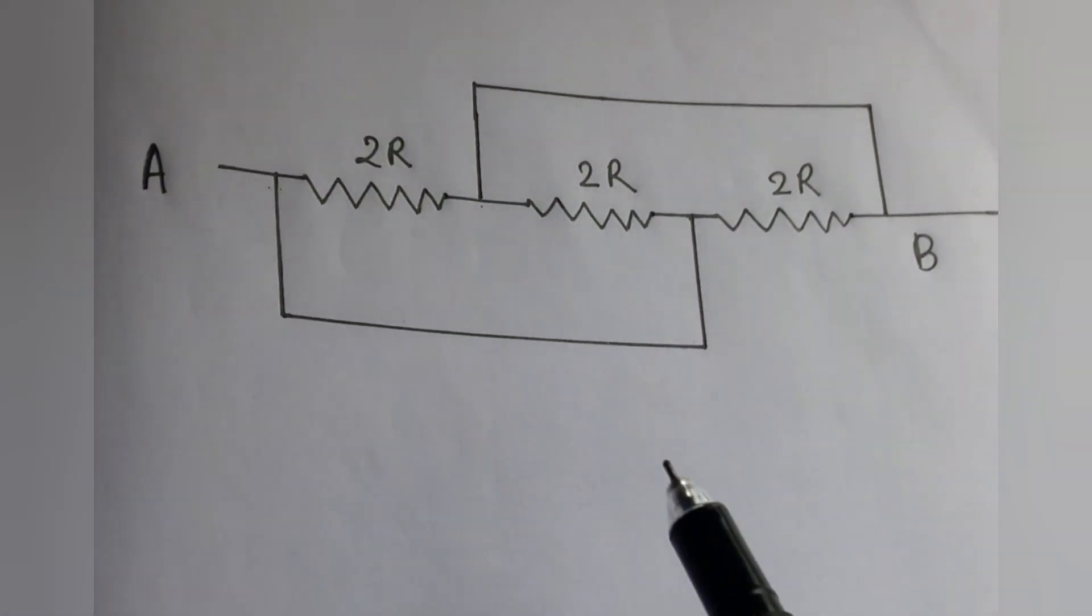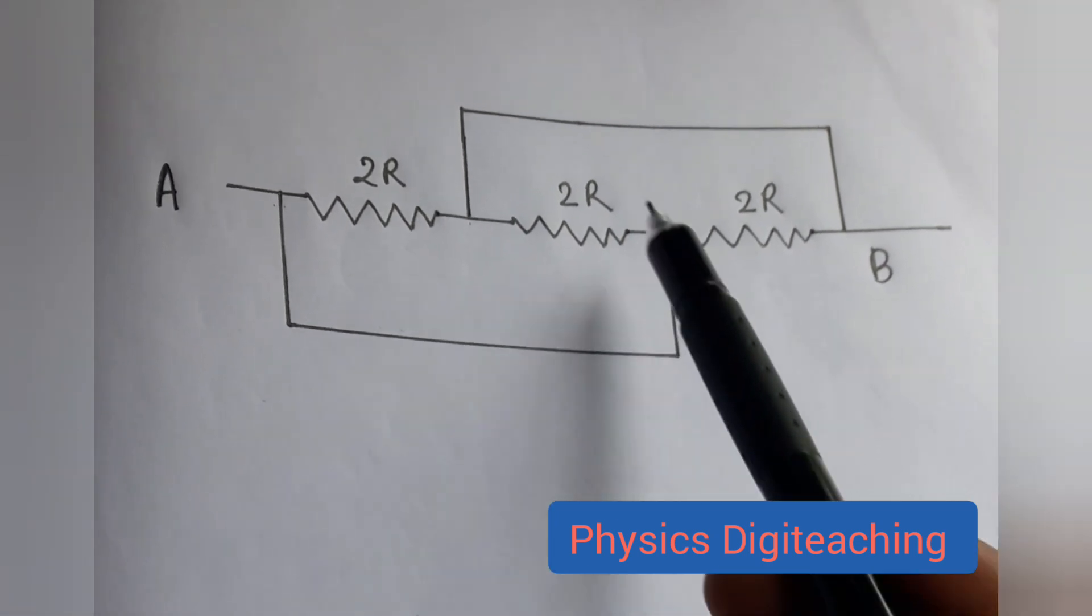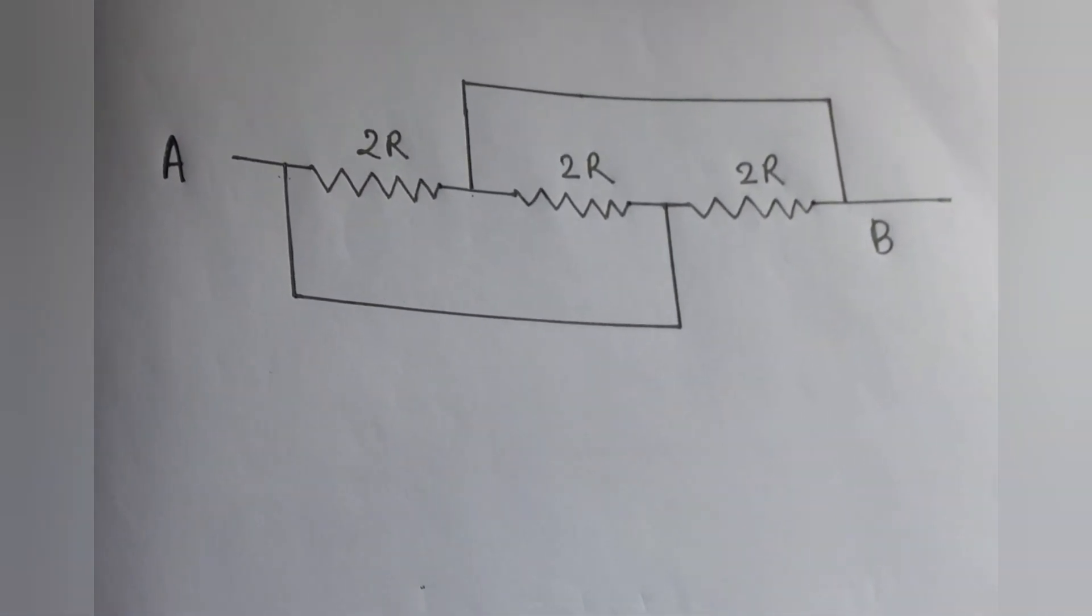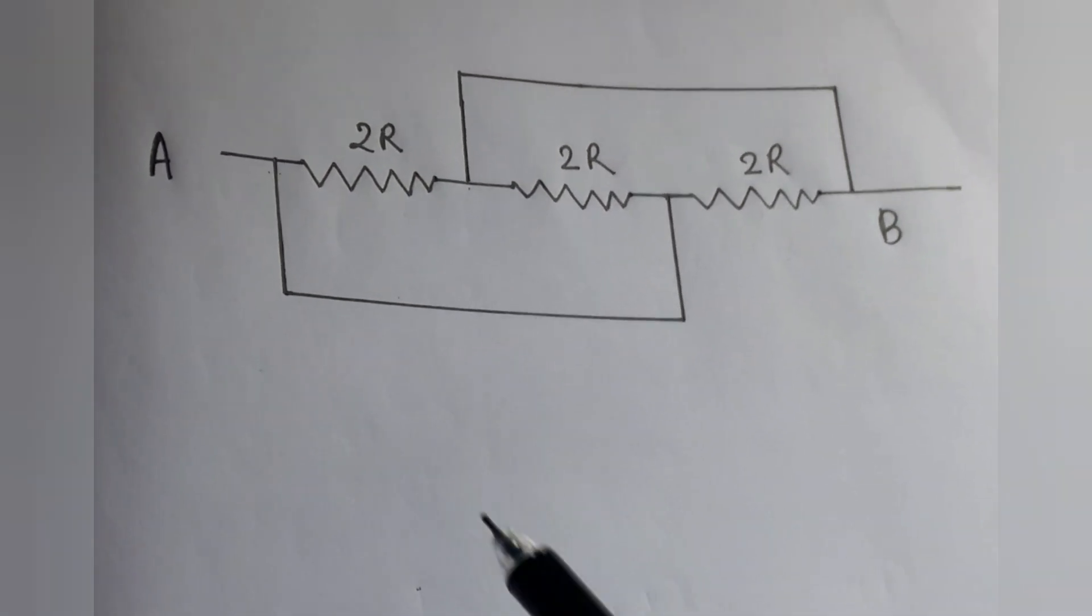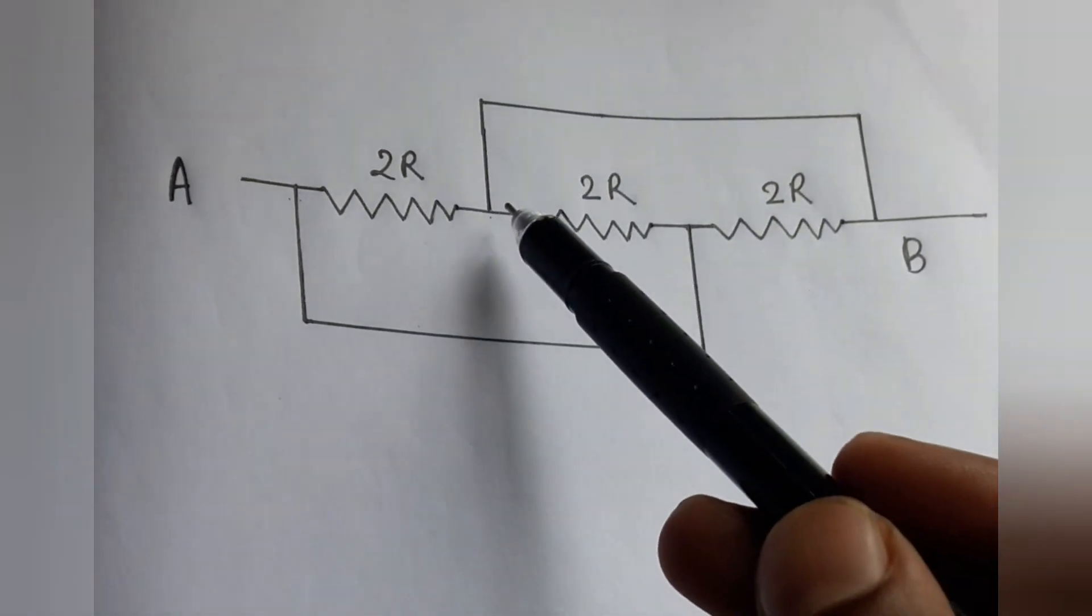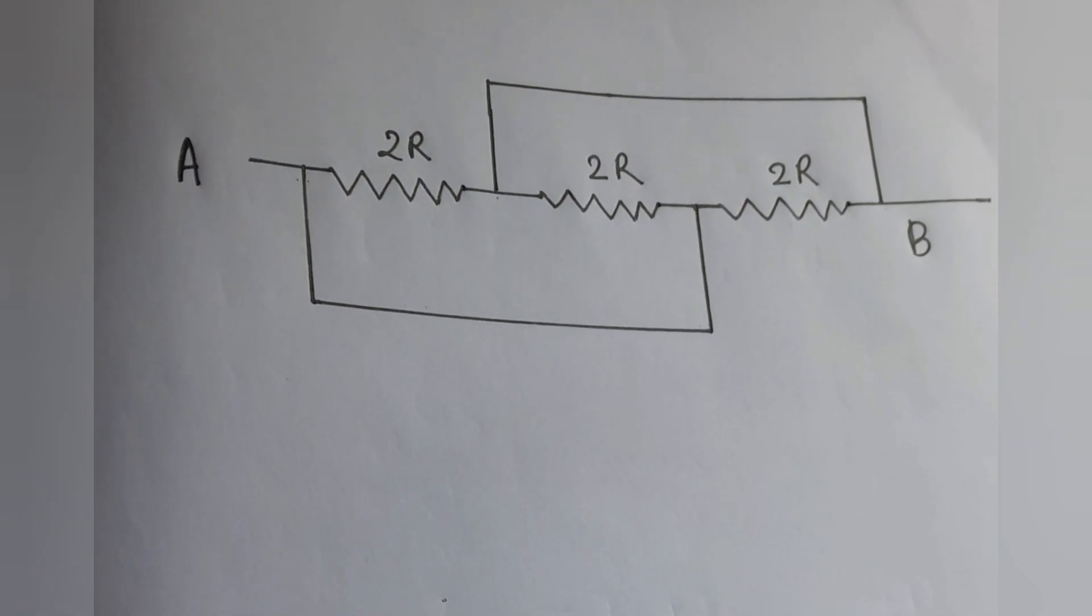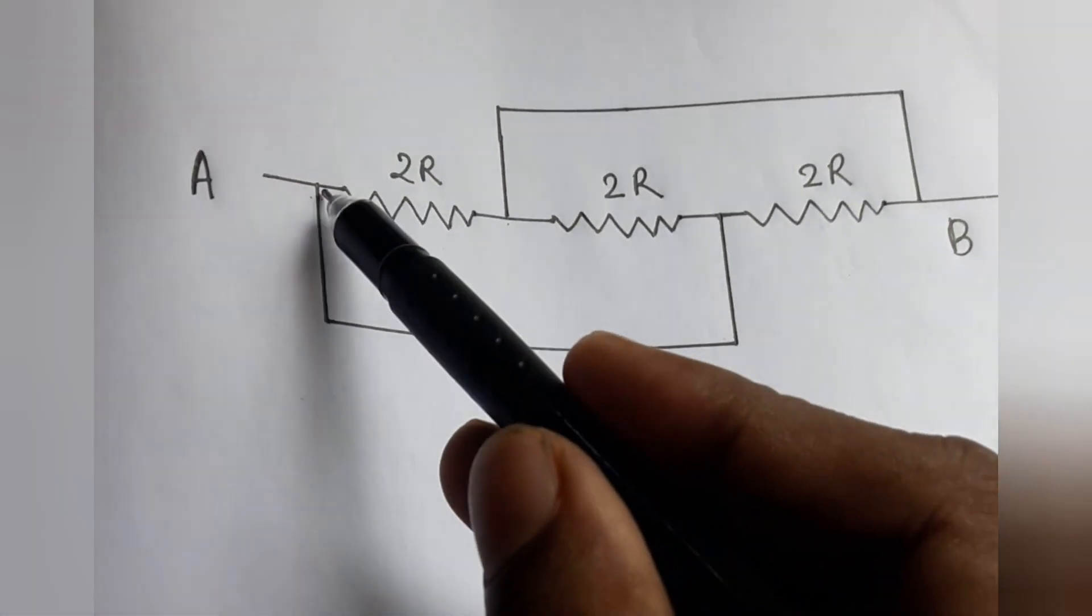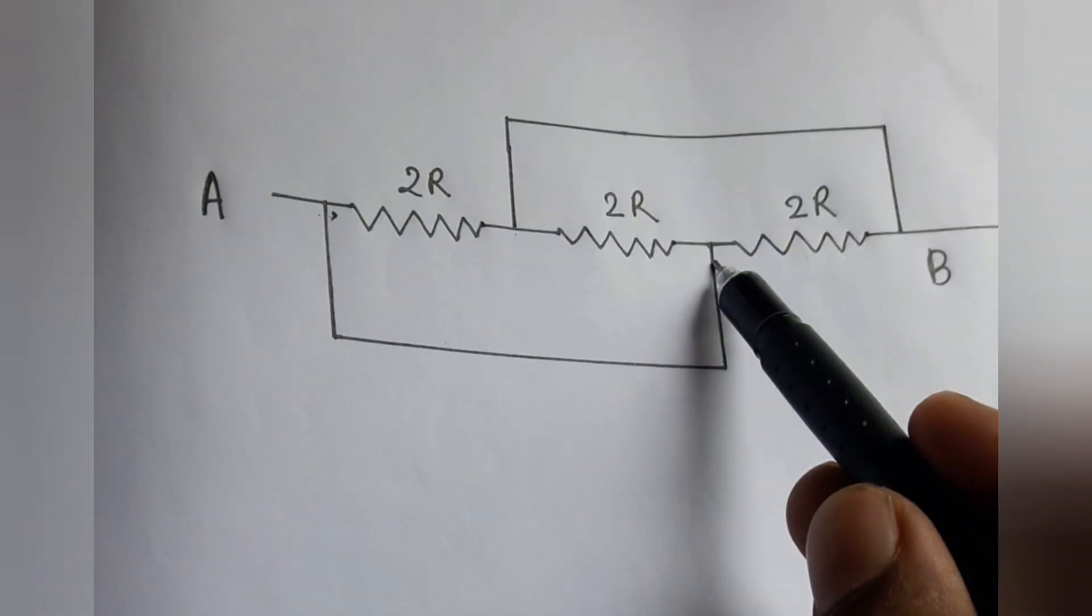Hello friends, observe the problem very carefully. It looks like a very hard problem but not so. You observe that this is a conducting wire having no resistance, and this is also a conducting wire having no resistance. Then this point is A and also this point is A.